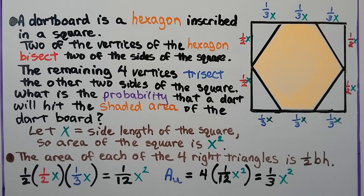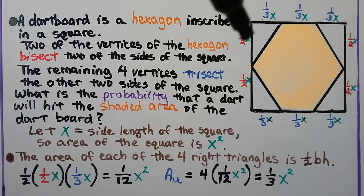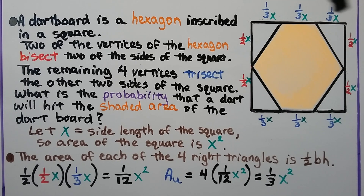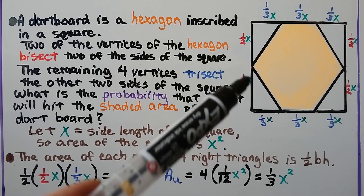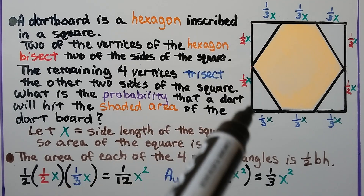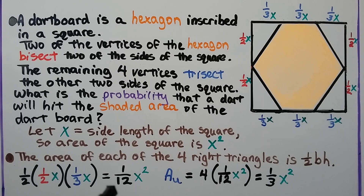Let x equal the side length of the square, so the area of the square is x squared. Since one side is bisected, each half is (1/2)x. Since the other side is trisected, each segment is (1/3)x. The area of each of the four right triangles is half base times height — half times (1/2)x times (1/3)x — which equals one-twelfth x squared.